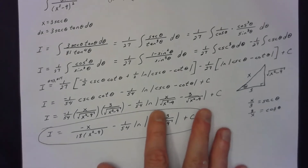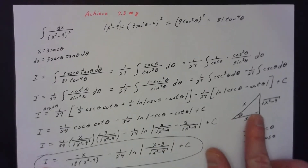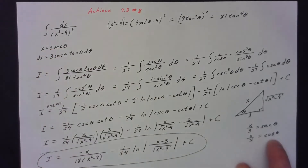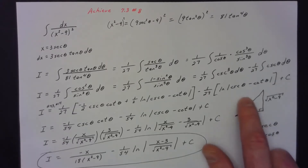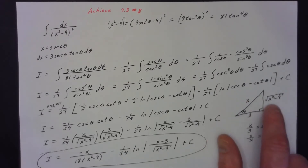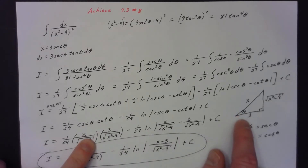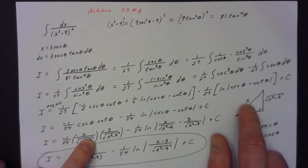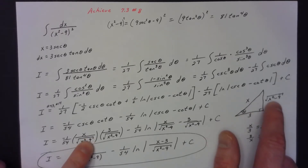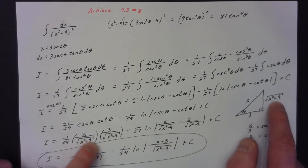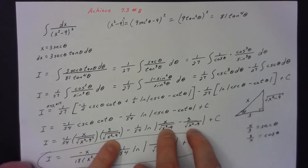After that, I had to refer to my trig triangle, which comes from the original substitution. I know x/3 is the secant of θ, which means cos θ = 3/x. So the adjacent side is 3, the hypotenuse is x, and the opposite side is √(x² − 9). Cosecant is the reciprocal of sine — hypotenuse over opposite. Cotangent is adjacent over opposite, so 3 over that square root.